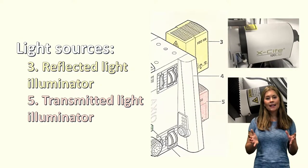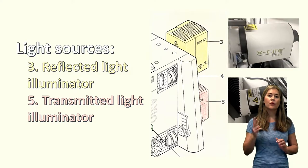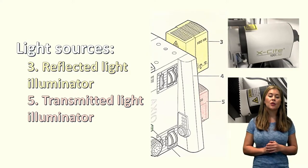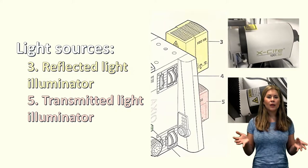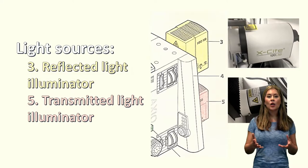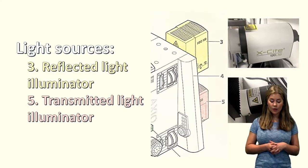Then the next part is the light sources. So with this type of microscope you have two options for light sources which means you can do a whole bunch of different types of microscopy. Today we'll be looking at bright field in particular but just keep in mind you might need to change the light source depending on what type of microscopy you'd like to do.